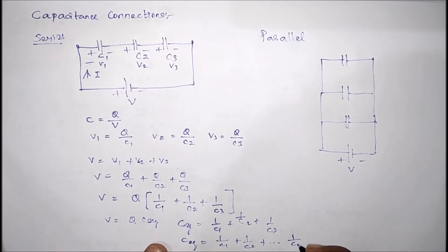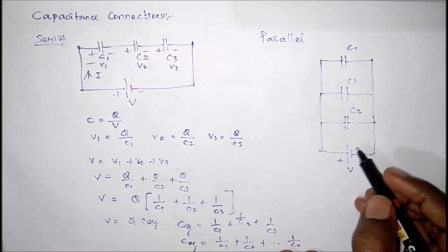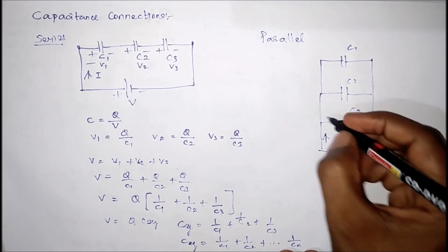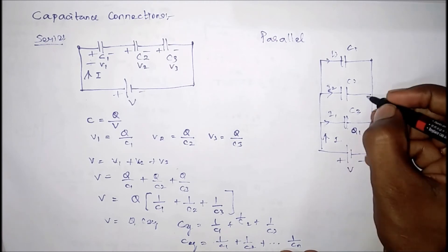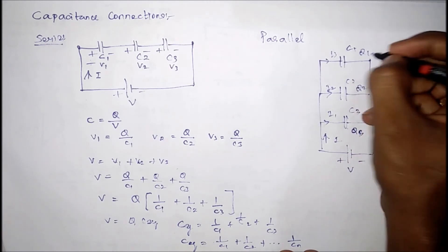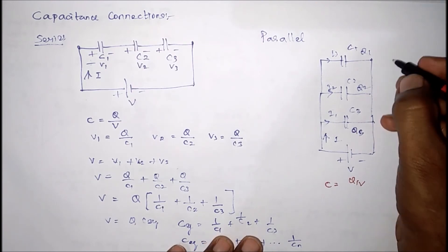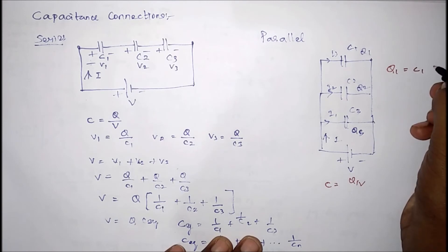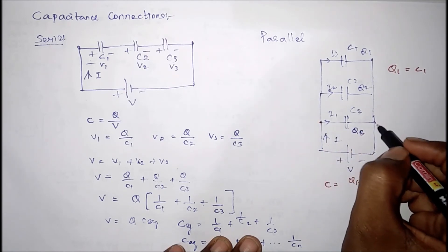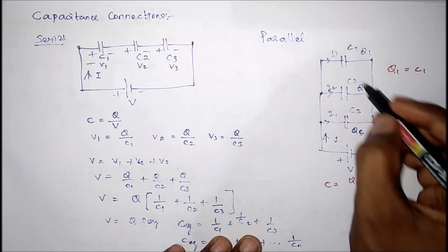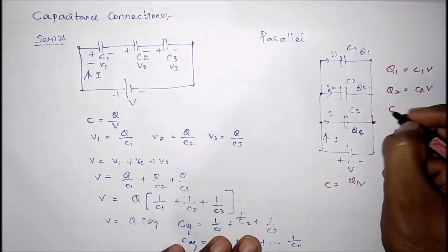Next is the parallel connection with capacitors C1, C2, and C3. In a parallel circuit, the total current i splits into i1, i2, and i3 through each capacitor, with corresponding charges Q1, Q2, Q3. In a parallel circuit, voltage is the same across all elements. The potential difference across each capacitor is V, so voltage across all capacitors is the same.